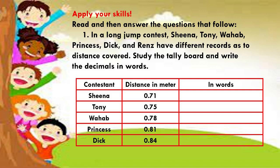So these are the contestants. Sheena got the distance in meters: 0.71. Tony: 0.75. Wahab: 0.78. Princess: 0.81. And the last, Dick: 0.84.